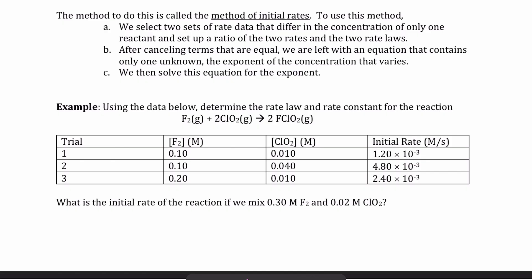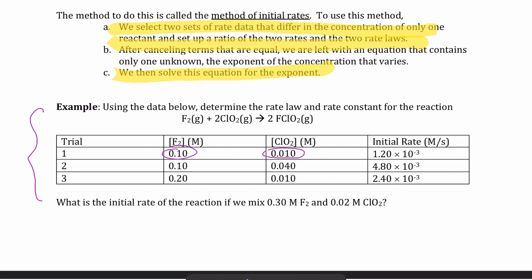Here I'm showing you the steps to go through once you have the data, and this is the example data we will use. There are three different trials. In trial one, we have two numbers for the reactants. For trial two, we change the concentration of ClO₂ compared to trial one. In trial three, we change the concentration of F₂ compared to trial one, but ClO₂ goes back to that same number. The key idea is that you have to change the concentration of a reactant from one experiment to the next, and then measure the initial rate.